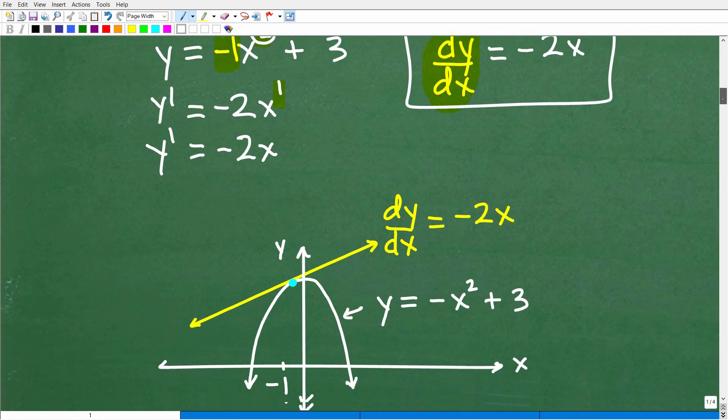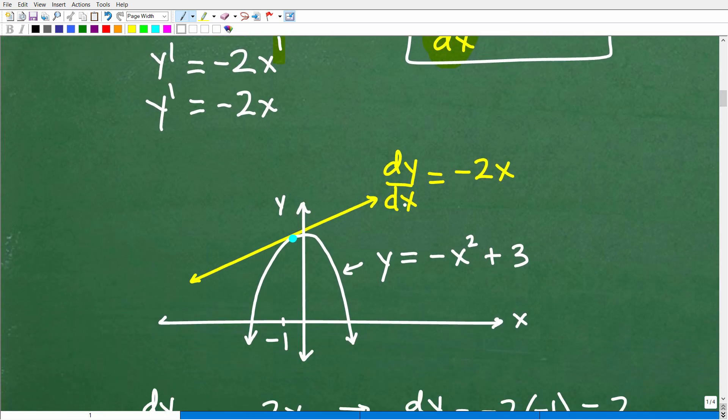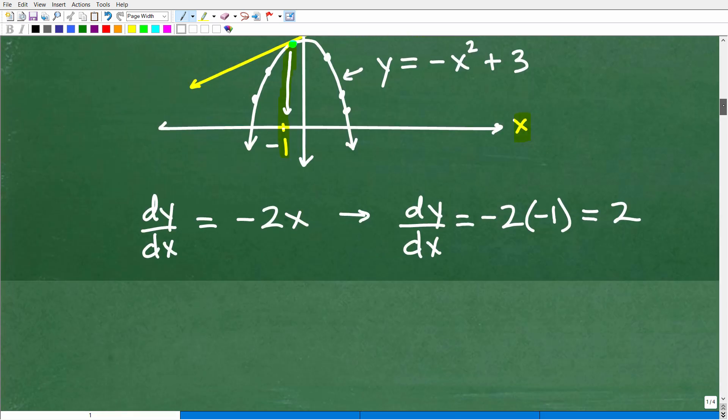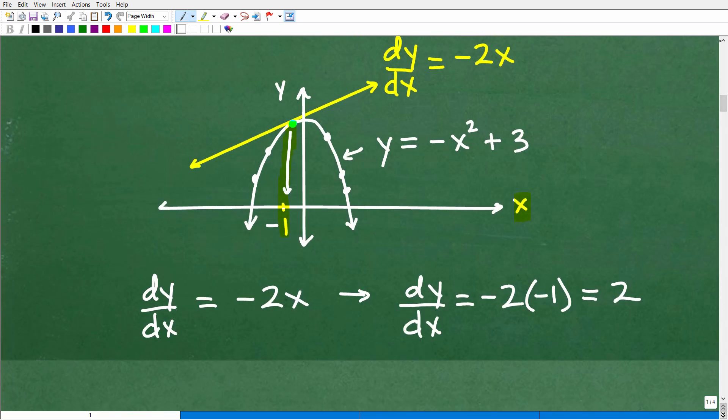All right, so that is the first derivative of this equation or this function. And it tells us what? Well, again, dy/dx or the first derivative of this negative 2x will tell us the slope anywhere along this curve that we choose. So the specific point that we're interested in is where x is negative 1. On the x-axis, it's negative 1 because it's right there. This point, if we look at the x value, it's negative 1.